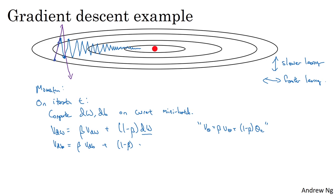And then you would update your weights using W gets updated as W minus the learning rate times, instead of updating it with dW, with the derivative, you would update it with vdW. And similarly, b gets updated as b minus alpha times vdb.